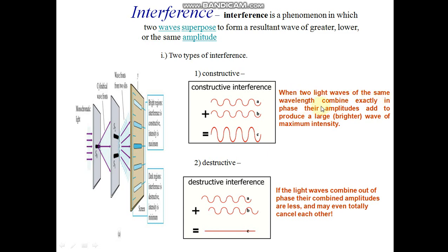When opposite phase or out of phase, this is destructive interface. Constructive interface: When two light waves of same wavelength combine exactly in phase, their amplitude adds to produce a larger, brighter wave of maximum intensity. Destructive interface: If the light waves combine out of phase, their combined amplitude are less and may even totally cancel each other.